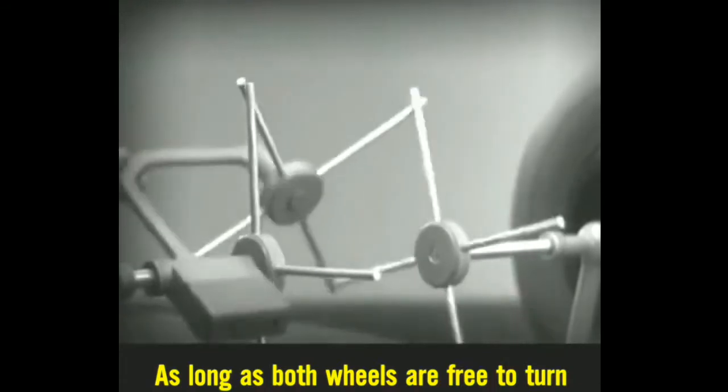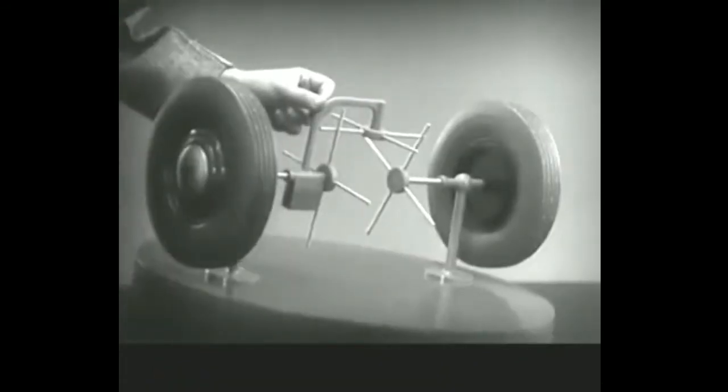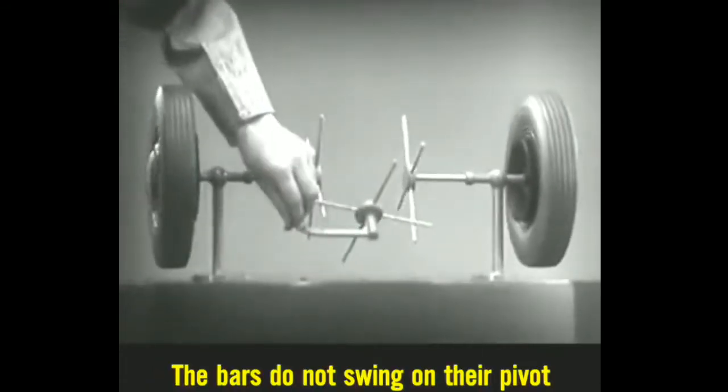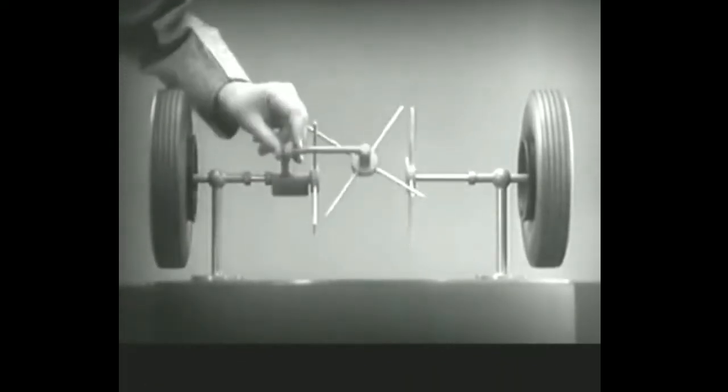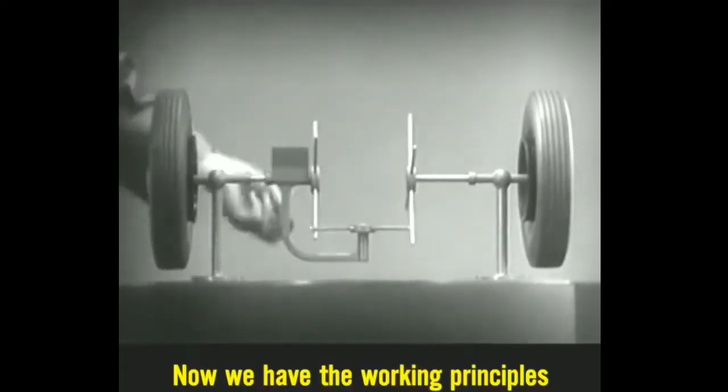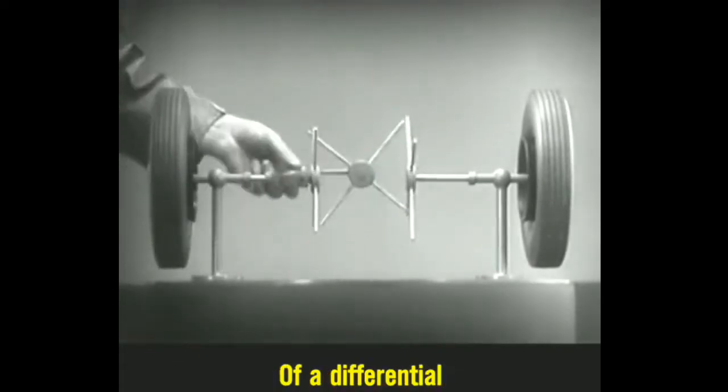As long as both wheels are free to turn, the bars do not swing on their pivot, and the wheels move at the same speed. Now, we have the working principles of a differential.